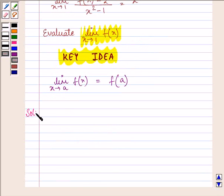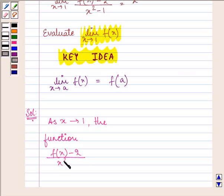Now, let us proceed with the solution. We know that as x approaches 1, the function f(x) minus 2 divided by x squared minus 1 approaches pi. But,